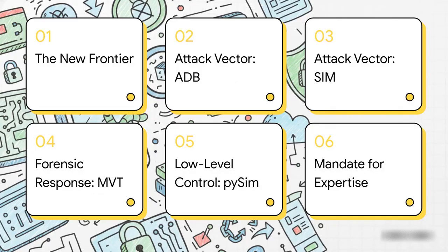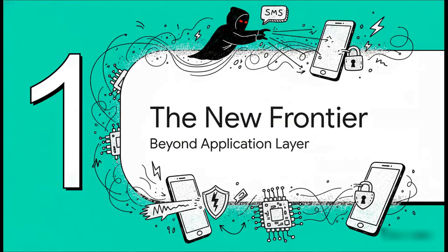Here's our briefing for today. First, we'll talk about this new frontier. Then we'll dive into two key attack vectors — ADB and SIM identity. After that, we'll pivot to the defense side with the MVT forensic framework, and then look at low-level control using PySIM. We'll wrap it up by talking about what this all means for us as professionals — the mandate for real expertise.